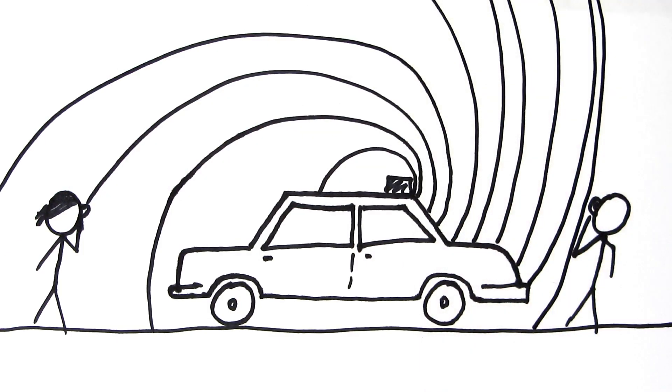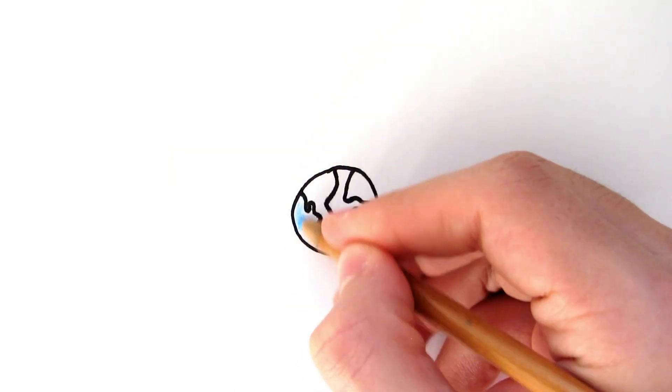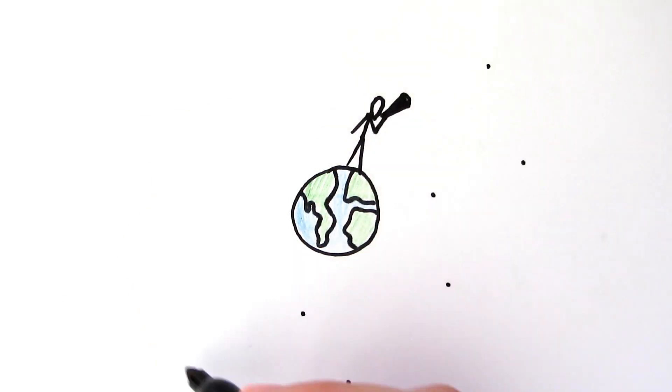then becomes low pitched as it goes away from you. We can see it happening with light when we look at distant stars for example. The light is being stretched towards the red end of the spectrum because the object is moving away from us, just as it was with the police car.